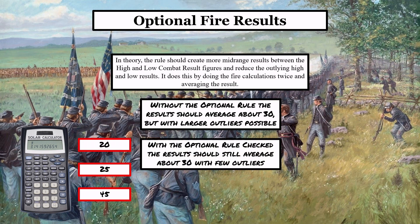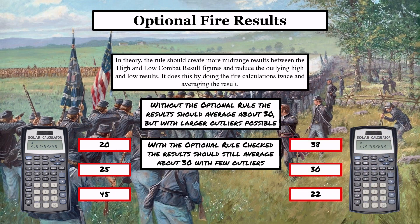With the optional rule checked, the results should still average about 30 but with fewer outliers, because they roll the dice twice. You're going to have numbers that are always closer to that 30 mid-range. You might have fire results like 38, 30, or 22 — you're going to avoid anything above 40 and below 20, usually. You're going to have fewer outliers away from that 30 mid-range because all the calculations are done twice.